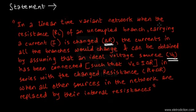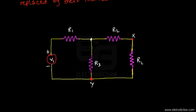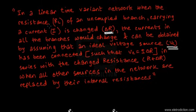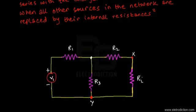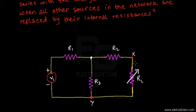The statement says that in a linear time-variant network, when the resistance RL of an uncoupled branch — you can see there is a resistance RL — if that resistance carrying a current I is changed, say we change the value of RL using a variable resistor, then of course the current flowing through branch X-Y would also change.